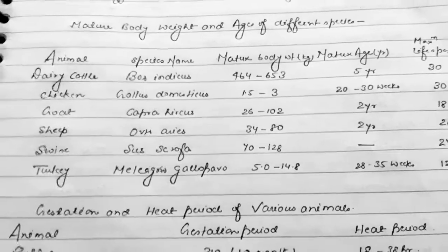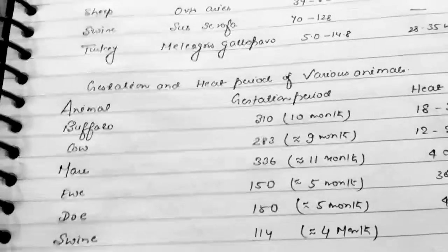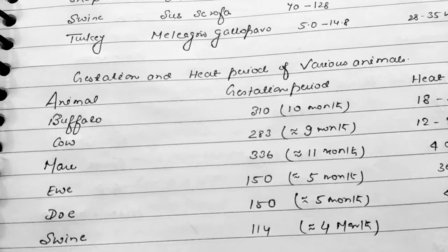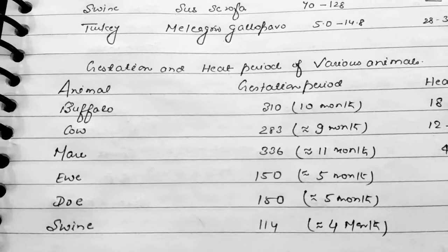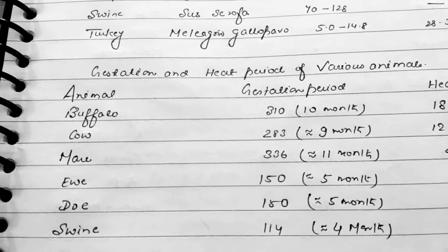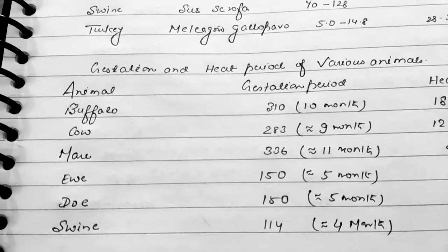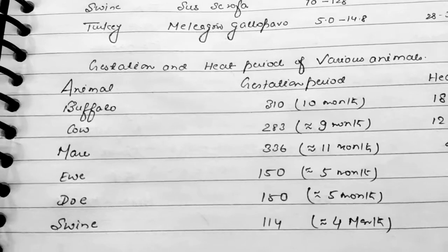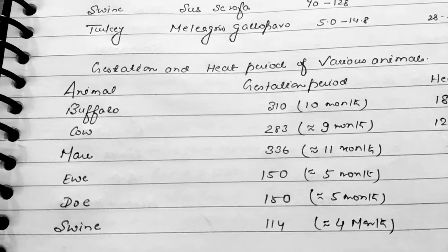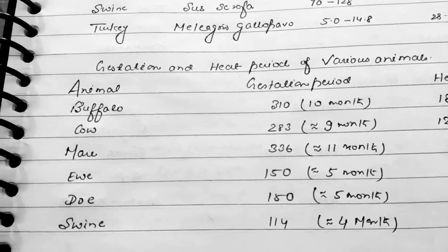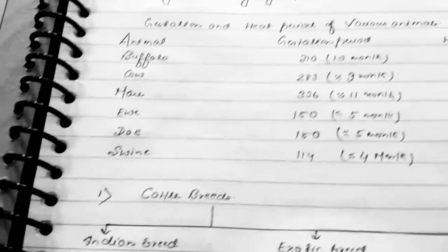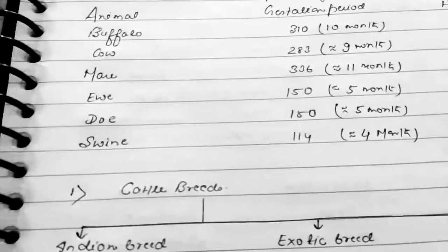Now come to the gestation and heat period of various animals. The gestation period of buffalo is around 310 days, which is approximately 10 months. The gestation period of mare is approximately 11 months, which means 336 days. The gestation period of ewe is 5 months, for doe it is also 5 months, and for swine it is approximately 4 months, which means 114 days. I have written months alongside days to make it easier to remember.